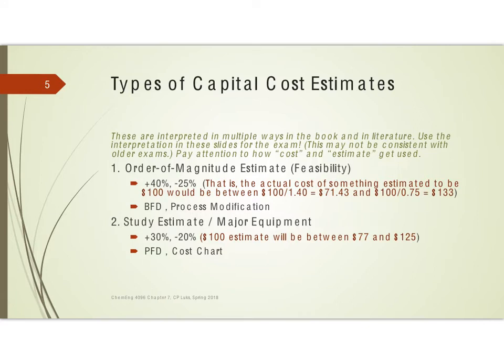Let's look at these with a little bit more detail. The first is the order of magnitude estimate, and you do this at the feasibility stage. You've just got a basic block flow diagram and are moving toward a process flow diagram.